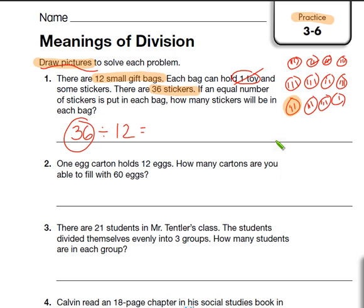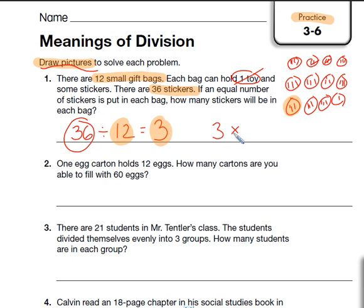So what is 36 divided by 12? It is 3. And the way that we check that is we do the inverse operation. We're going to take 3 and multiply it by 12. So just to check it, 3 times 12 is going to equal 36 — and yes, that is true.